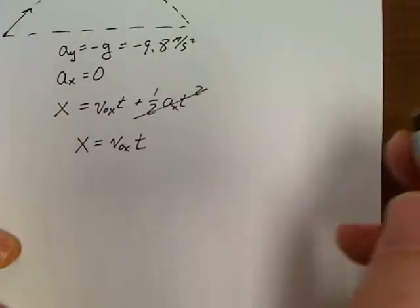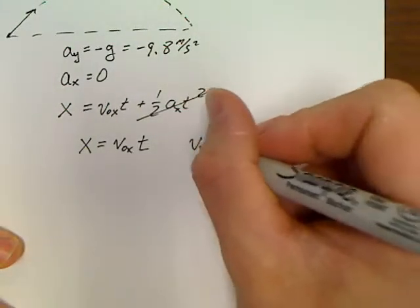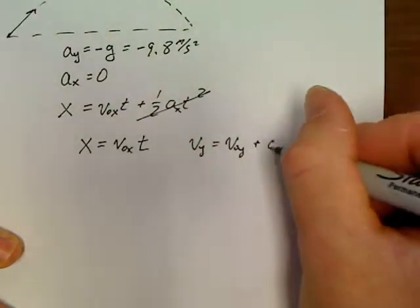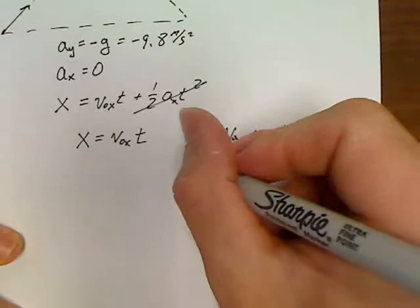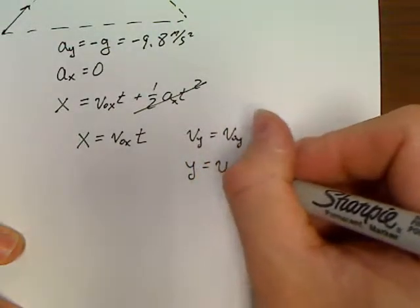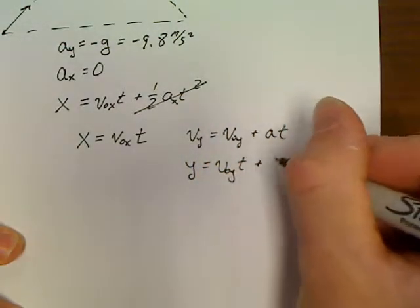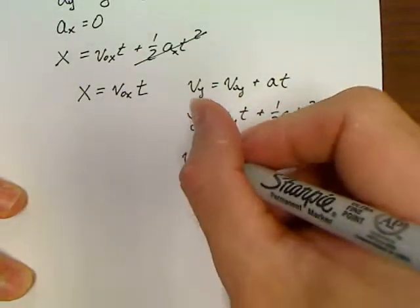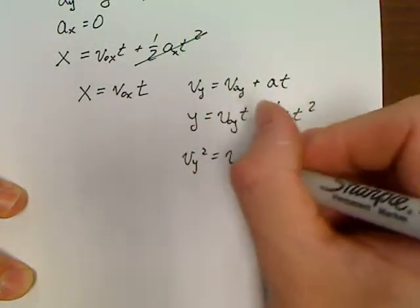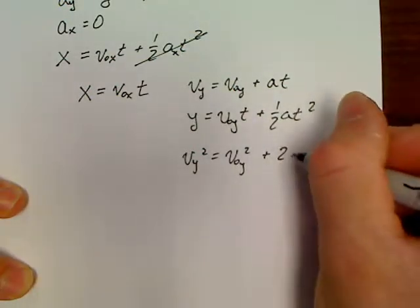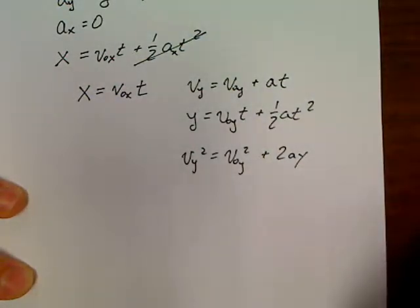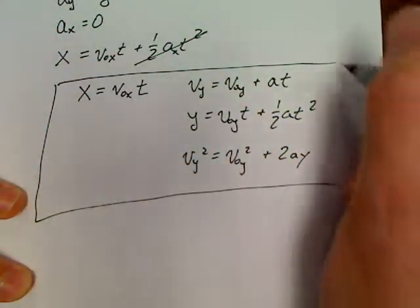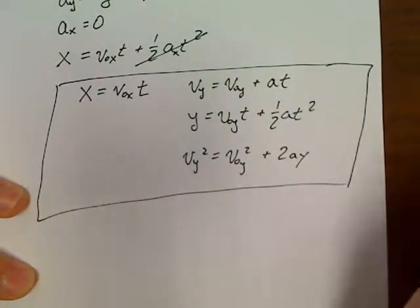Now, in terms of the y dimension, we've still got Vy equals VOY plus At. We've got y equals VOY t plus one-half At squared. And we've got Vy squared equals VOY squared plus 2Ay. So for a projectile, these are going to be our core set of equations that we're going to use.